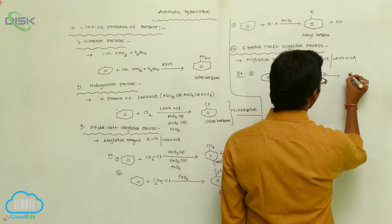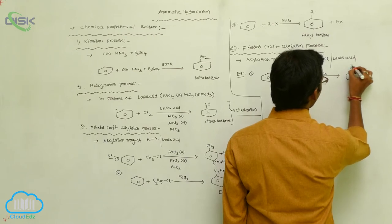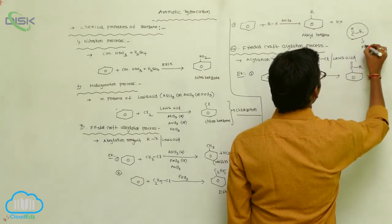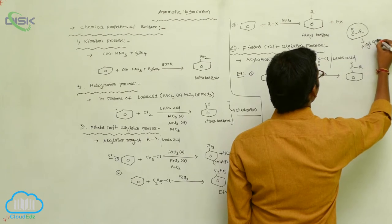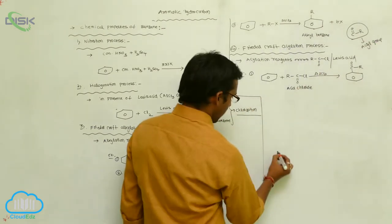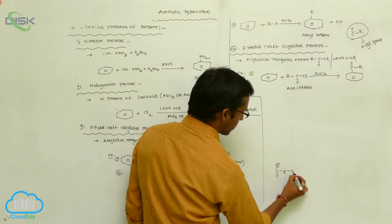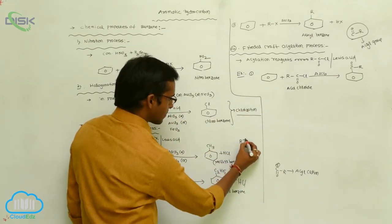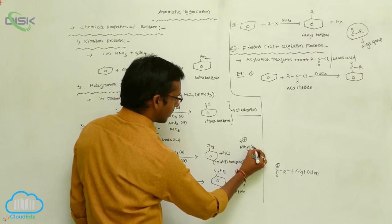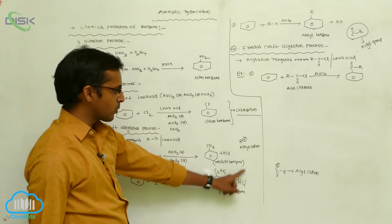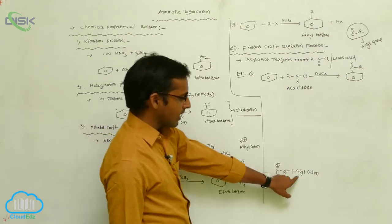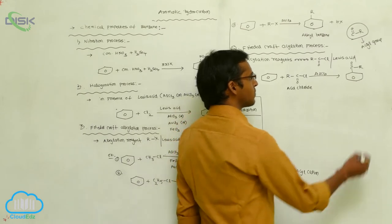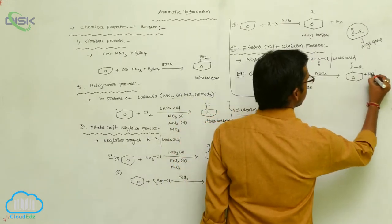The acyl group is C(=O)R. When the acyl group carries a positive charge, it is called an acyl cation, which is produced in the Friedel-Crafts acylation process. If R+ is present, it is called an alkyl cation, which is produced in the Friedel-Crafts alkylation process. HCl is also eliminated in the acylation process.